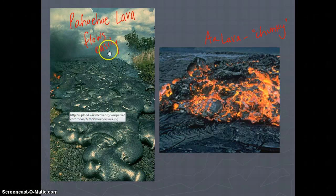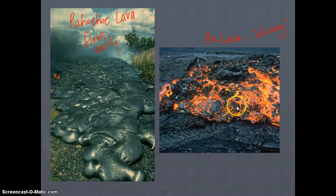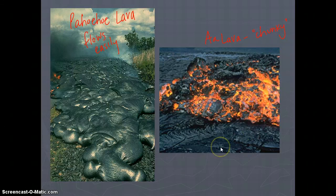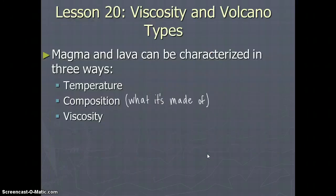So pahoehoe flows very easily, while a-a lava — the chunky lava — has a much higher viscosity and is not going to flow as easily or be as runny. That concludes our Lesson 19 slides. If you need to go back and review or rewind and write down what you need to, please feel free to do that.